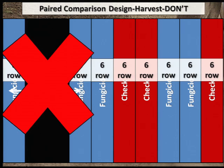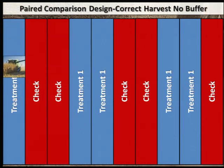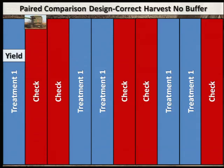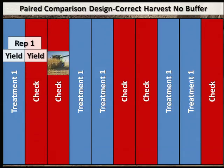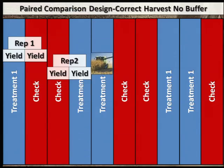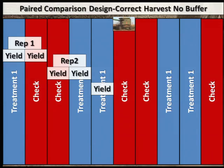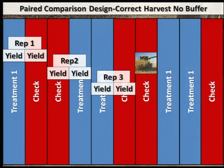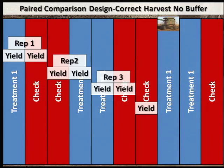Correctly harvesting your plots can help ensure the reliability of your results. When harvesting a treatment without a buffer, you would compare the harvest weights from the first treatment with the first strip of the untreated check for your first replication. You would then compare the second check strip against the treatment strip for the second rep, and so on.